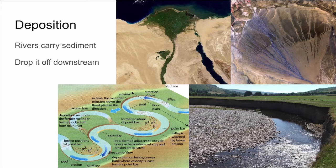On the other hand, if that fan shape forms on land, we call it an alluvial fan. This is a semicircular deposit of rocks and other debris. It is formed when a fast-moving mountain stream flows onto a flat plain with a very quick change in gradient. As the stream slows down, it leaves its deposits of sediment.